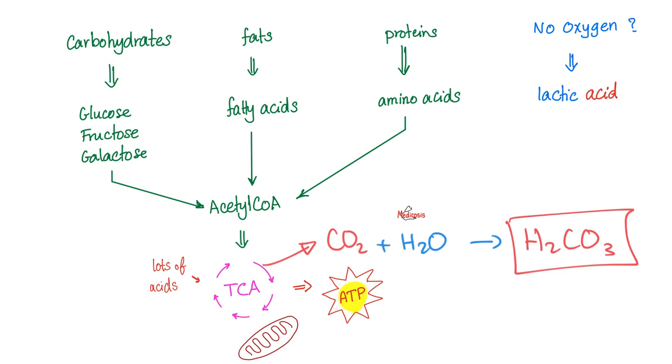Moreover, metabolism in the absence of oxygen gives you what? Lactic acid. This is anaerobic glycolysis. And of course, lactic acid is an acid. Your metabolism secretes acids. And that's why your blood pH is slightly alkaline to counteract this acidosis. Beautiful.